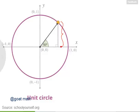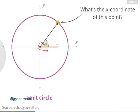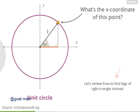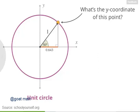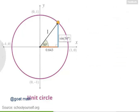Let's draw a line from this point down to the x-axis so that we have a right triangle. What's the x-coordinate of this point — in other words, what's the length of this horizontal leg of our right triangle? This angle is 50 degrees, and the hypotenuse of our right triangle is the radius of the unit circle, which has length 1. Nicely done! The hypotenuse is 1, so the length of this horizontal side is the cosine of 50 degrees, which is approximately 0.643. That's the x-coordinate of this point. The y-coordinate of this point is the sine of 50 degrees, which is about 0.766.